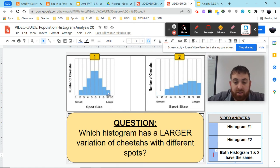When we look at the second histogram, we see the same 10 variations, but here we see that we're missing bars in one and two, meaning we have cheetahs with spot sizes 3 to 10, but not 1 to 2. So when we're looking at which has the larger variation of spots,